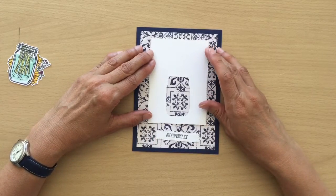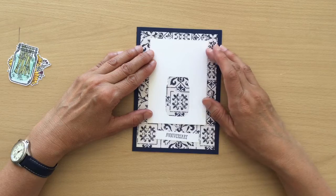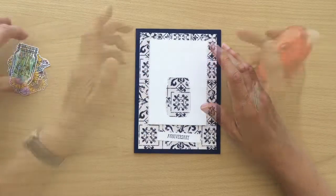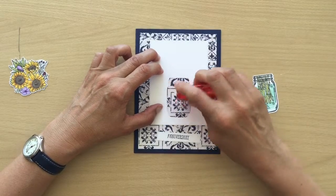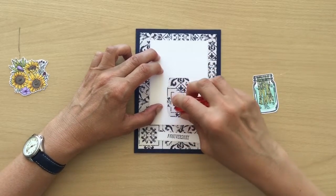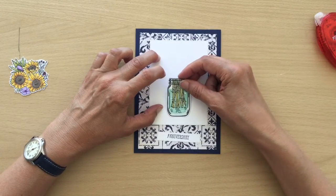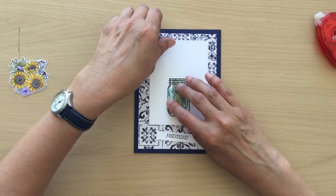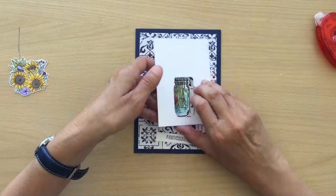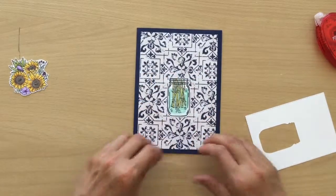When you've decided where you want to put your rectangle and you've got that straight, so I'm happy with where that is, I'm just going to use a bit of Snail on the in the hole and then I'm going to place my jar into the gap, and then we can take this off. So we've just stuck the jar in at the moment.